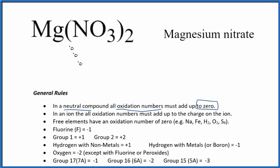The second thing is we can look at each individual element with our rules here. Magnesium is in group 2 on the periodic table, so its oxidation number is +2.